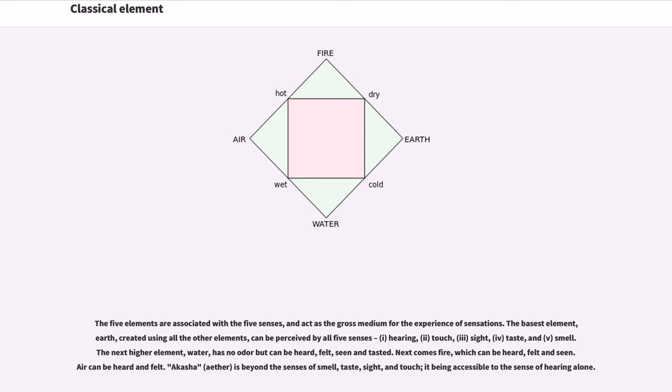The five elements are associated with the five senses, and act as the gross medium for the experience of sensations. The basest element, Earth, created using all the other elements, can be perceived by all five senses: hearing, touch, sight, taste, and smell.